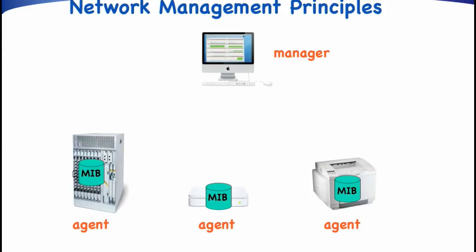Some of these modules are implemented in every agent since they hold generic information applicable to all devices, for example the IP address of the device or the time the agent has been up. Other modules are only implemented in certain kinds of devices since they hold information specific for that particular kind of device, such as a forwarding table in a router or the toner level for a printer. The manager usually knows the MIB structure of the various agents, and thus which management information is maintained by each agent.